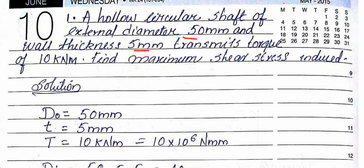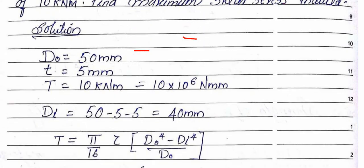To calculate maximum shear stress, the equation is T = (π/16) × [(D_o^4 - D_i^4) / D_o], where D_o is the outer diameter.